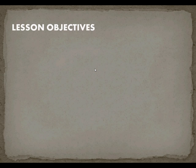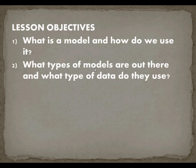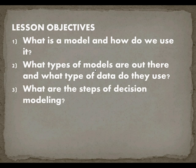Our lesson objectives are first to answer the question: what is a model and how do we use it? The second question is what types of models are out there and what types of data do they use? The third question is what are the steps of decision modeling? These steps are very important because every decision model that you see should follow these three simple steps.